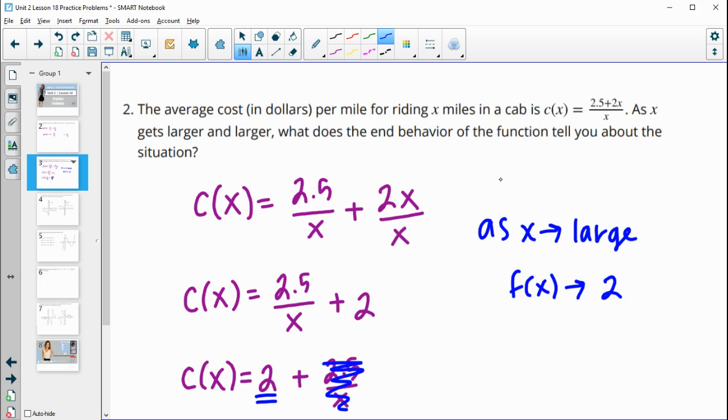And so what does that tell us about this situation? That the more and more miles that we go in this cab, or that we ride in this cab, the closer and closer the cost will be to $2 per mile. So this kind of fixed fee of $2.50 basically is irrelevant by the time we've traveled a lot of miles.